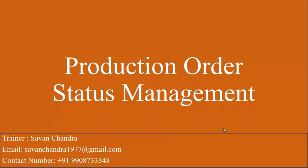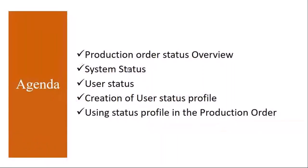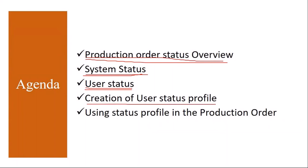We'll be starting our next topic: production order status management. In this topic, we will be covering production order status overview — what is production order status and how it works. Then we will see system status, what it is and how it works. Then user status, what it is and its importance. Then creation of user status profile, and finally using the status profile in the production order.